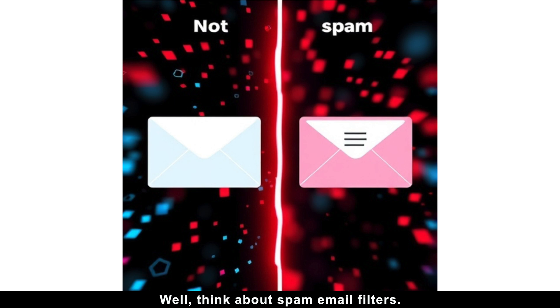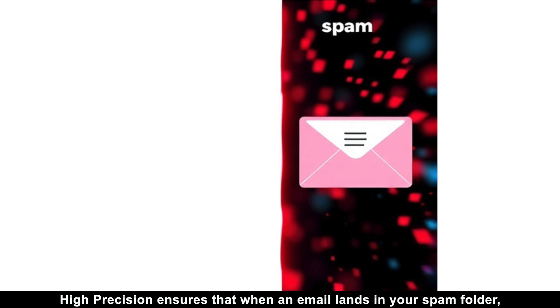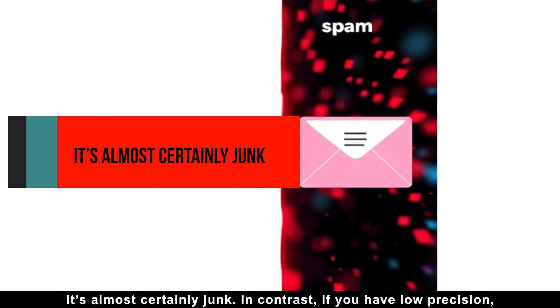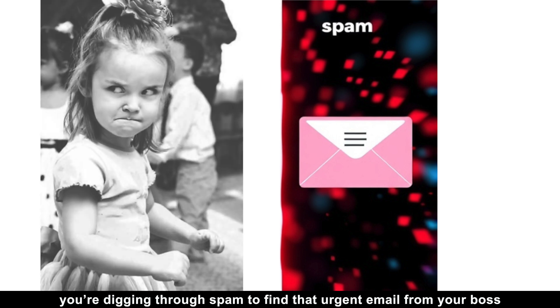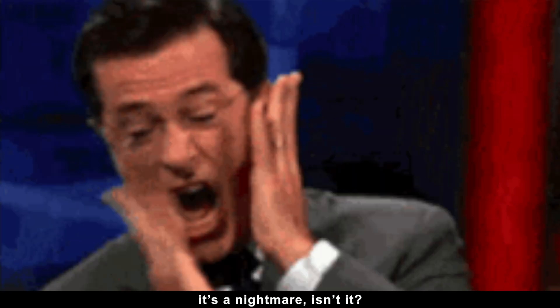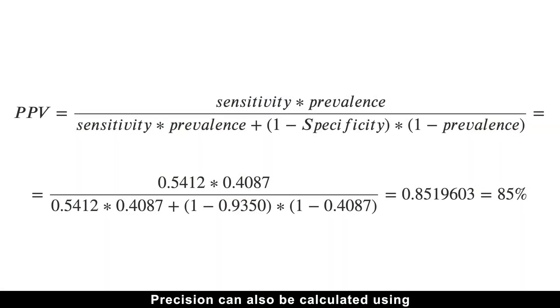But why does precision matter so much? Well, think about spam email filters. High precision ensures that when an email lands in your spam folder, it's almost certainly junk. In contrast, if you have low precision, you are digging through spam to find that urgent email from your boss. It's a nightmare, isn't it? Precision can also be calculated using sensitivity, specificity, and prevalence, though the formula is a bit heavy and difficult to remember.